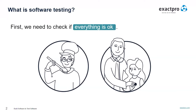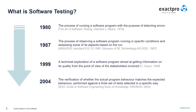Here is a more formal definition of software testing. As you can see, it's slightly evolved over time. Initially it was all about running a software program with the purpose of detecting errors. But in fact, you don't always need to execute the program to find defects. The modern definition of software testing considers comparison of the expected program behavior and the actual program behavior.